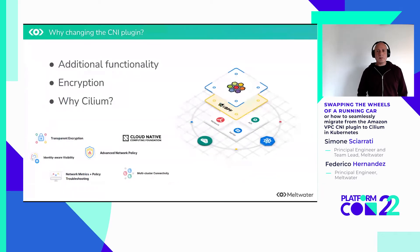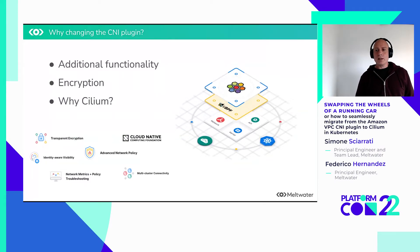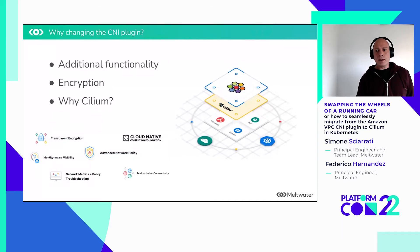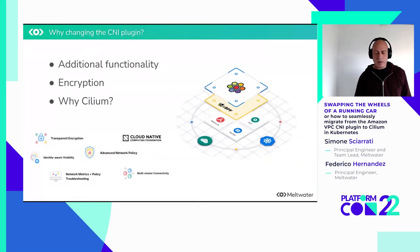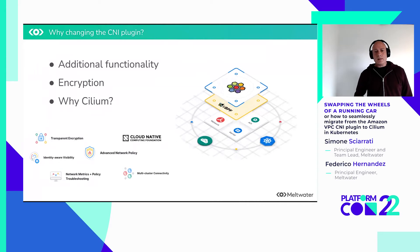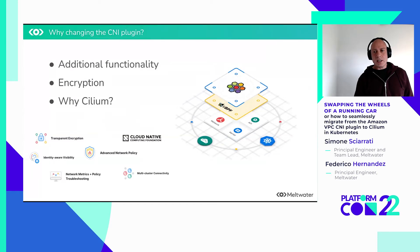So why change the CNI plugin? We're always interested in providing additional functionality — for example, we wanted to add network policies or better network observability. But what triggered specifically this work was a requirement to encrypt all network traffic between applications in the Kubernetes cluster. We have been following Cilium for a long time, and it looked like a great choice for this goal because we would be able to roll out encryption cluster-wide without users having to do anything. Another reason is Cilium has wider adoption — many managed Kubernetes providers have adopted it as the default CNI plugin, and many large companies use Cilium as well. So it seemed like a good choice community-wise.